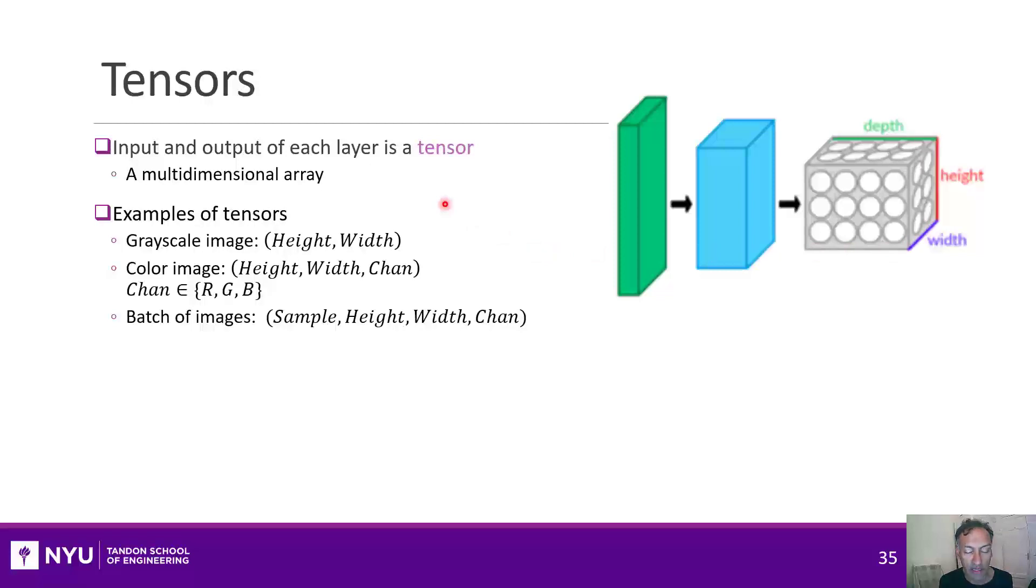Unknowingly, perhaps, you have actually seen many examples already of tensors. So for example, a grayscale image is just a matrix of values, or pixel values, height and width. So that would just be a two-dimensional tensor.